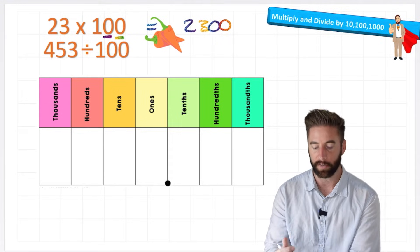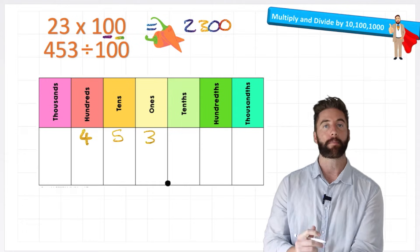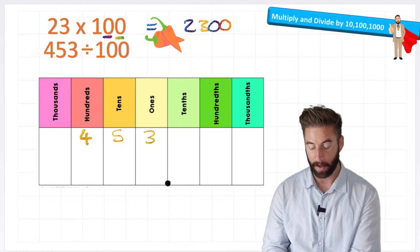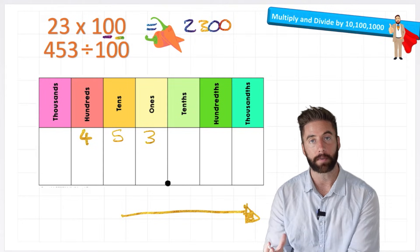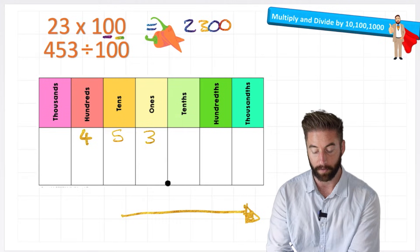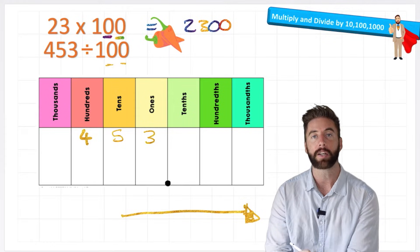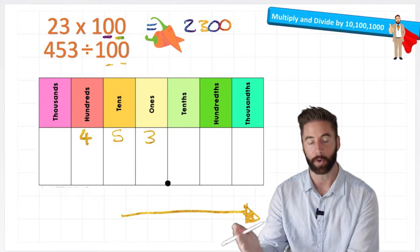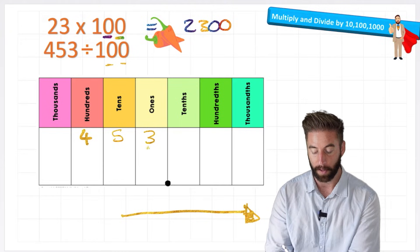Okay, so let's look at our division question: 453 divided by 100. Now I'm dividing, so remember I'm going to be going down the place value chart to the right. How many times am I going to go to the right? Well, I'm dividing by 100, so I need to make it 100 times smaller, meaning I'm going to move it one, two places. So here we go: I move my 3 one, two.